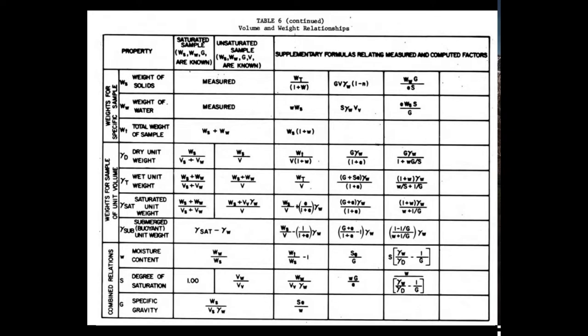The submerged unit weight is only valid hydrostatically and can be used with effective stress calculations, which we'll get into shortly. Moisture content and water content are the same for geotechnical purposes unless you've got an environmental issue. Degree of saturation: dry soils have zero, fully saturated samples have unity. Specific gravity is an expression of density — specifically the density of the solids, just the particles themselves, not the density of the total soil sample, which also includes the water and air. Don't confuse those.